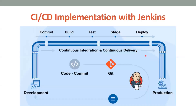Without Jenkins, we develop the code in Anypoint Studio, take the JAR, and deploy it into CloudHub. Here's the concept: we develop in Anypoint Studio, commit the code using Git, and push it into GitHub, Bitbucket, or Azure DevOps. We're going to use GitHub. Git and GitHub are different — I have created a separate video for that.